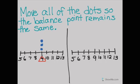So I want to move them so that it is still balanced at nine. How can I do that? Well, I'm going to take my dots and move them. So here I have moved my dots and my balance point is still nine. How did I know to do this?